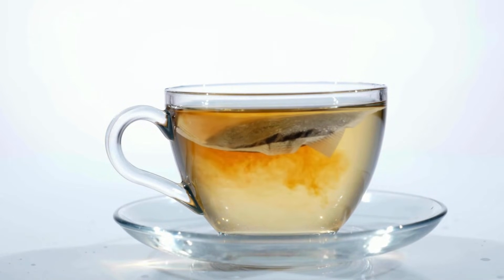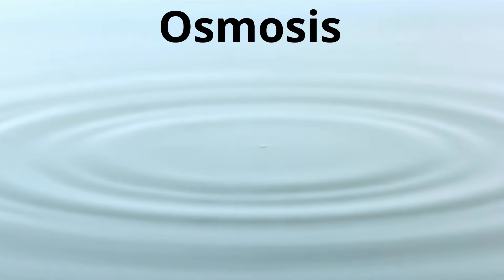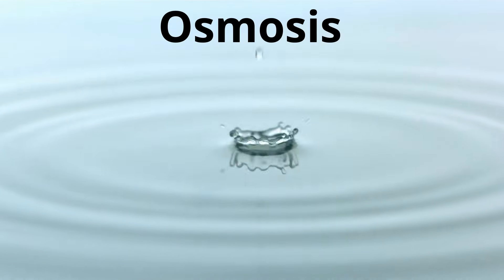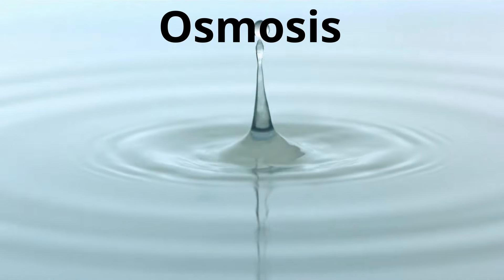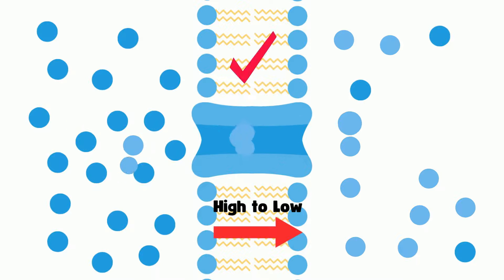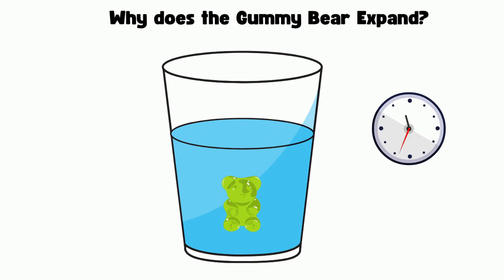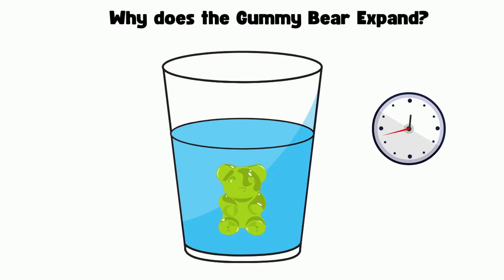Now let's talk about a special kind of diffusion called osmosis. Osmosis is like diffusion, but it's specifically about how water moves. Water moves across a special barrier called a semi-permeable membrane — think of it like a gate that only lets certain things move through. In this example, water is moving from where there's lots of it outside the gummy bear to where there is less of it inside the gummy bear. That's why the gummy bear gets bigger — it's absorbing water.